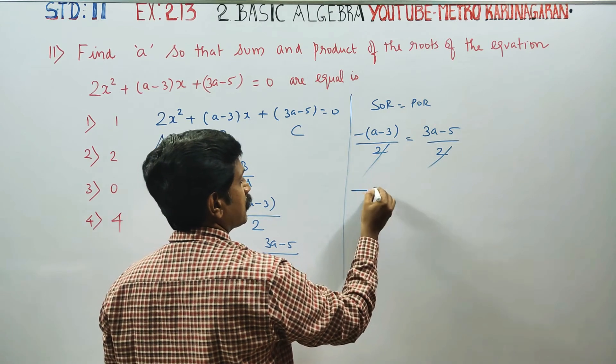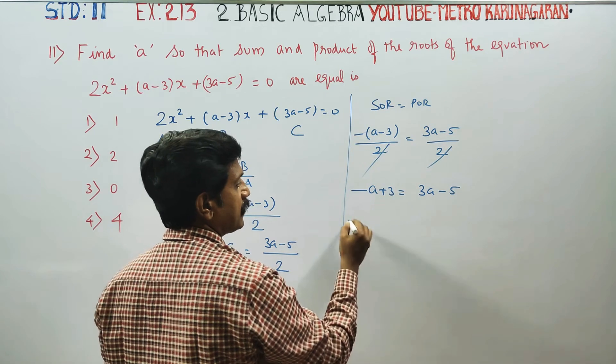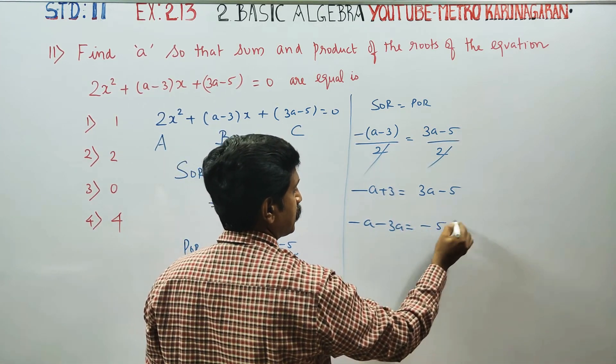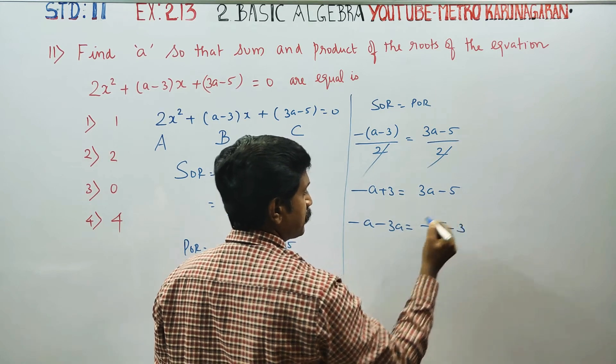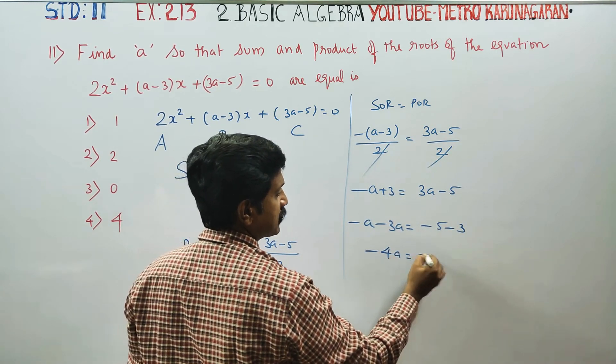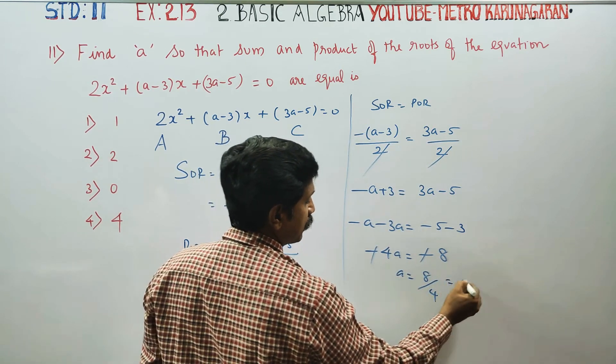-A + 3 = 3A - 5. Moving terms: -A - 3A = -5 - 3, which gives -4A = -8. Therefore A = 2.